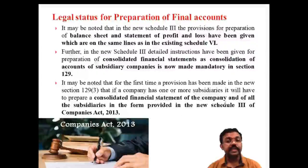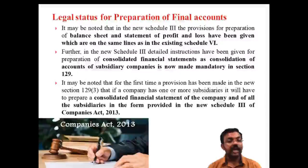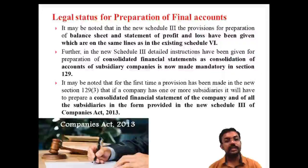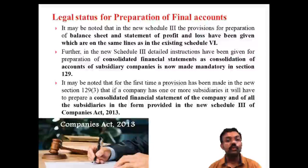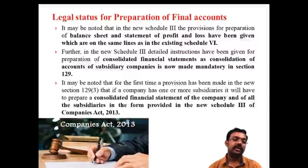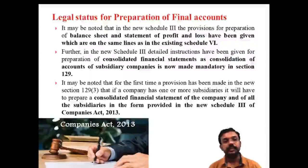The consolidated financial statements of the company and all subsidiary companies are to be prepared in the form of the new Schedule Three. It may be noted that for the first time, under Section 129(3), if a company has one or more subsidiaries, it will have to prepare consolidated financial statements. Subsidiary companies must prepare their final accounts in the form of Schedule Number Three.